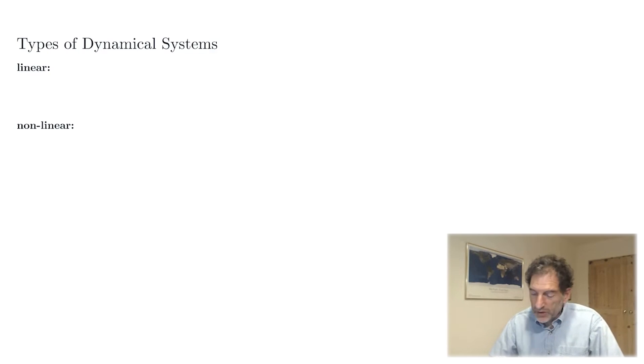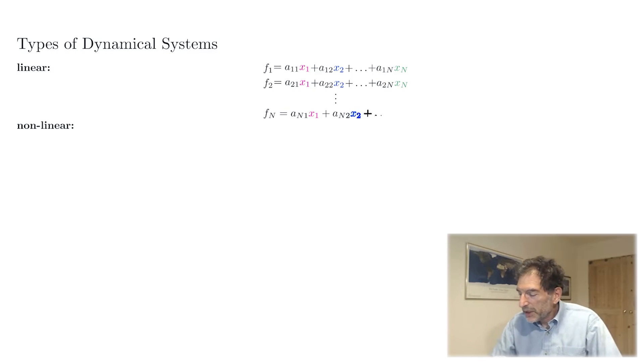What I mean by a linear system is that the functions f sub i on the right-hand side of the basic equation of motion are strictly linear functions of the state coordinates. For example, f sub 1 equals a_11 x_1 plus a_12 x_2 plus dot dot dot a_1n x_n. Then f_2 equals a_21 x_1 plus a_22 x_2 plus dot dot a_2n x_n, all the way down to f sub n equals a_n1 x_1 plus a_n2 x_2 plus dot dot dot to a_nn x_n. These are strictly linear functions of all the coordinates.